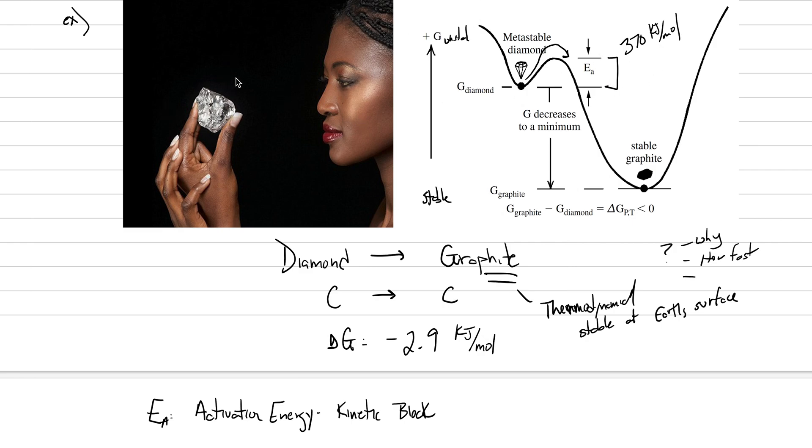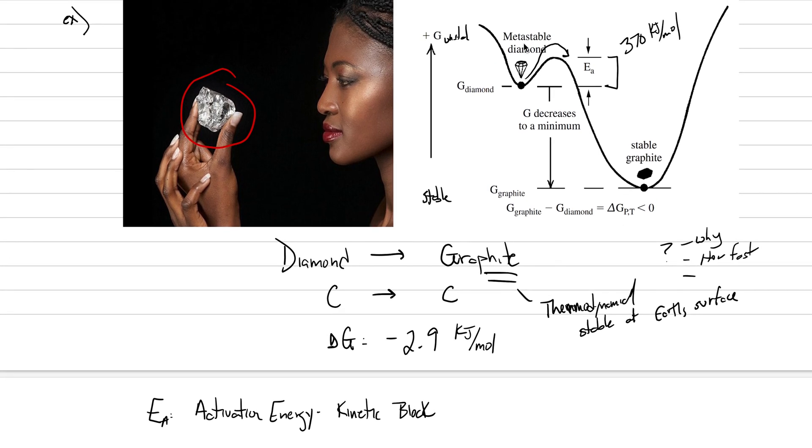Which is why this feature, which is only stable deep in the Earth's mantle, can persist for billions of years at the Earth's surface, even though thermodynamics say it can't. So what is diamond? Diamond is actually metastable at the Earth's surface. And that's what this vocabulary word is right here.